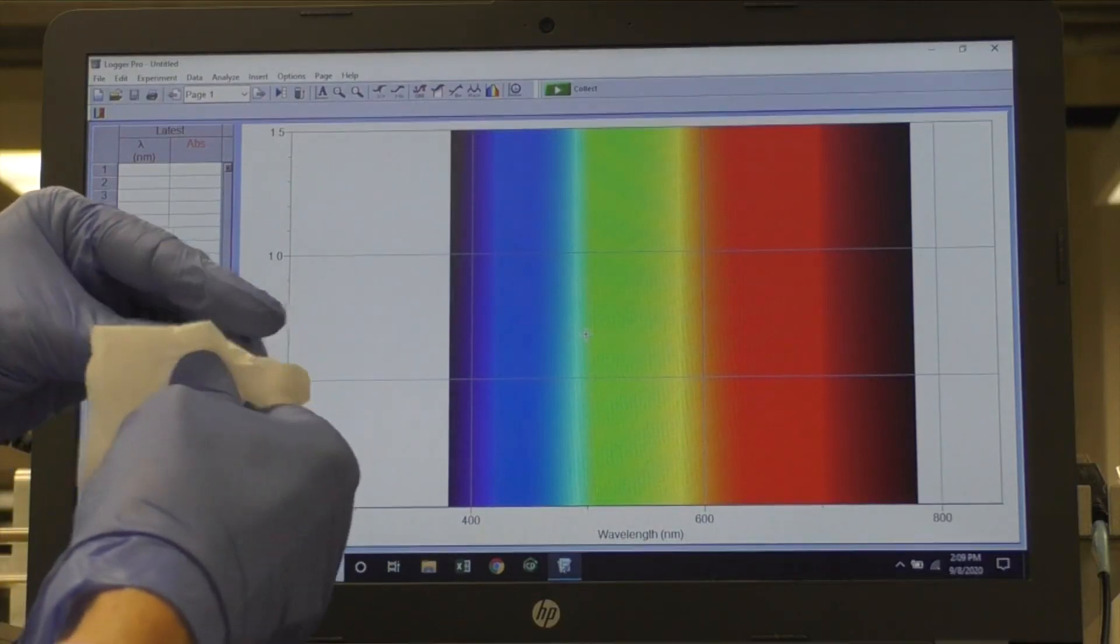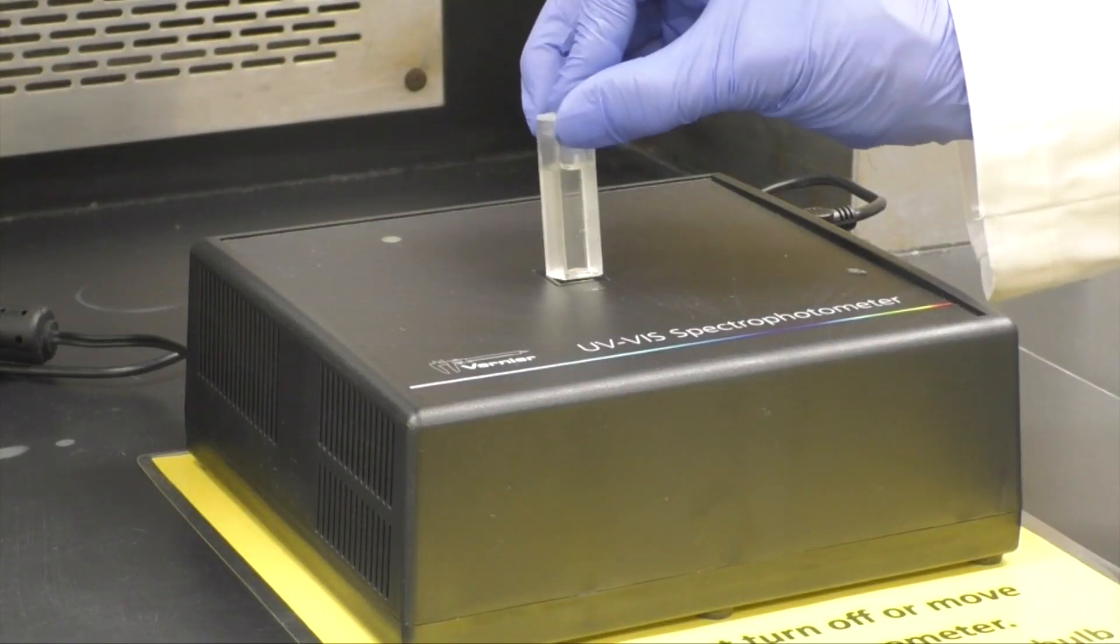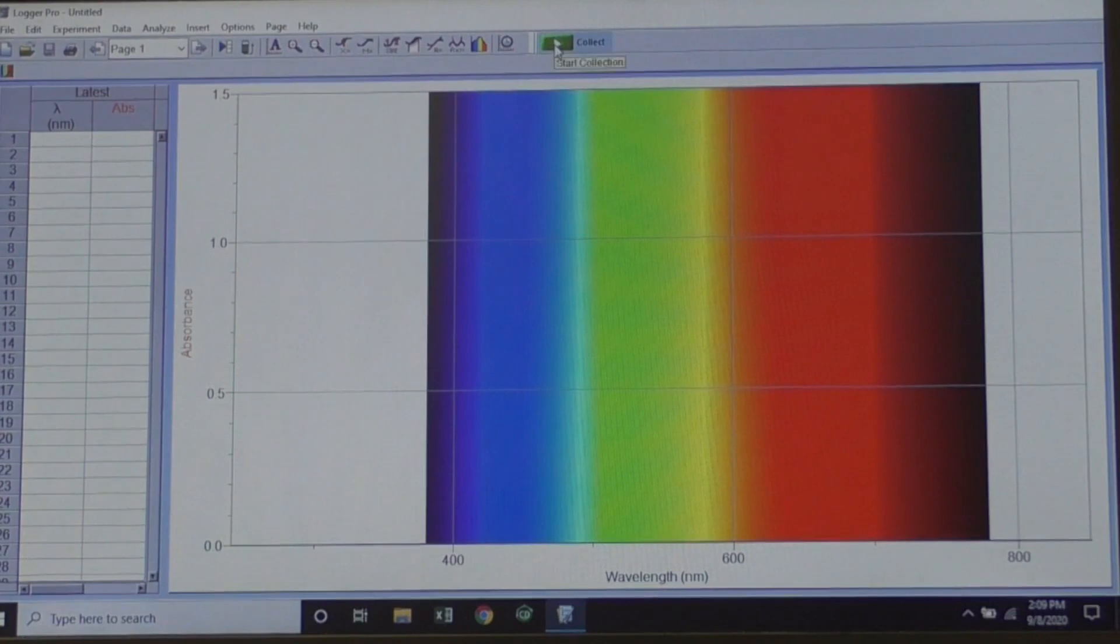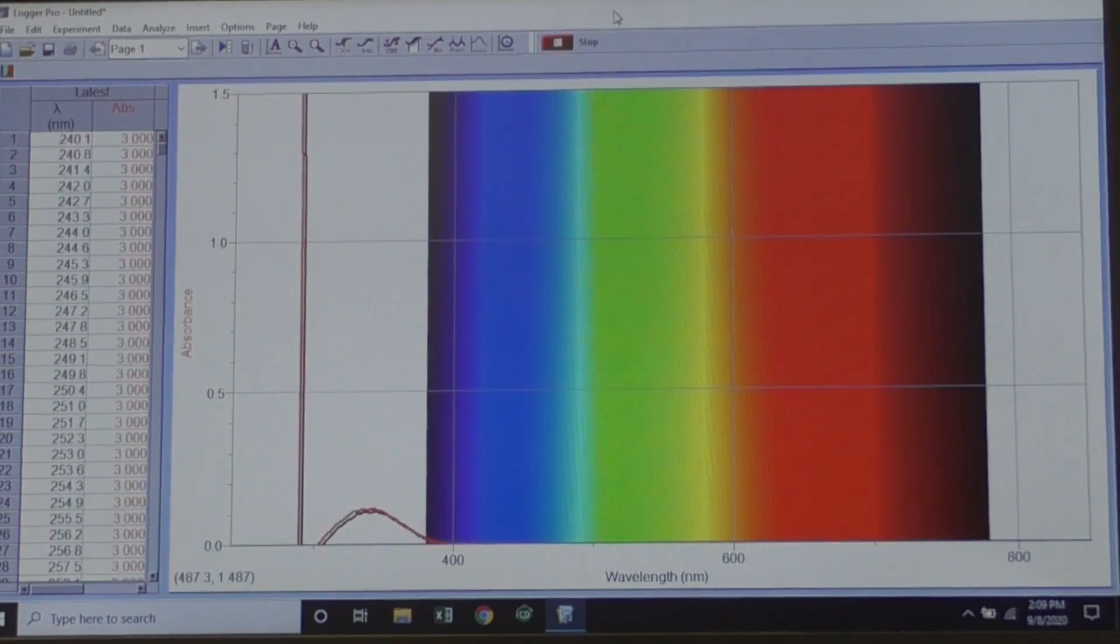When 5 minutes has passed, wipe the standard cuvette and place it in the spectrometer with a clear side facing forward. Click Collect, wait a few seconds, and then click Stop.